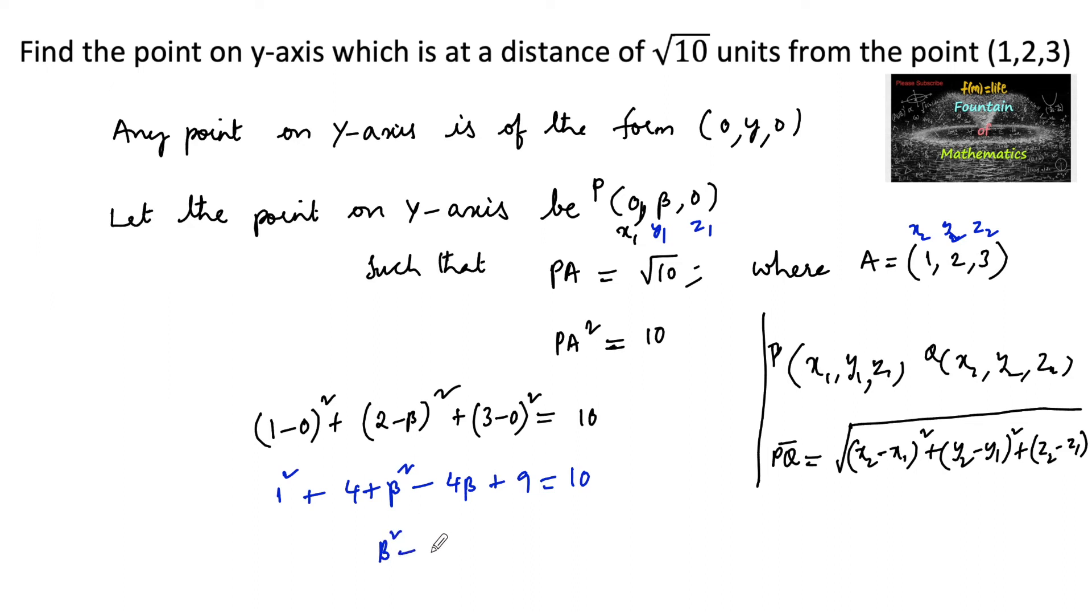So, we can write beta square minus 4 beta plus, here 1 plus 9 is 10, and here 10 gets cancelled. So, here remains only plus 4 equals to 0.